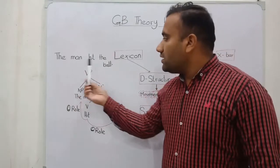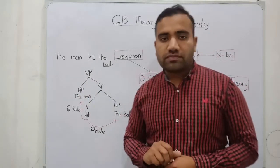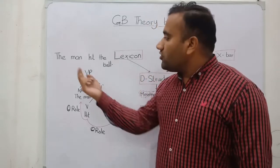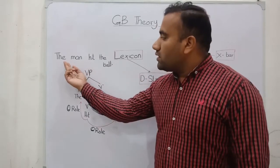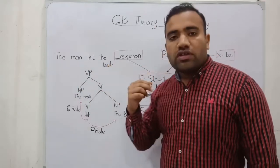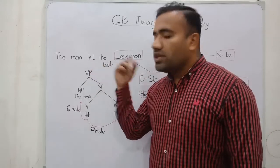We have the sentence: 'The man hit the ball.' This is our sentence. In this sentence we have two NPs: one is 'the man,' the second is 'the ball.' We have two NPs and the second is 'hit.'